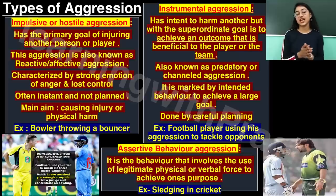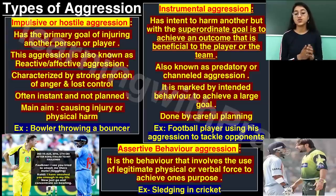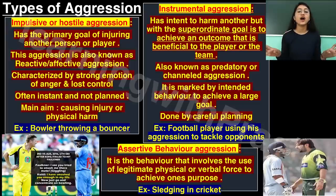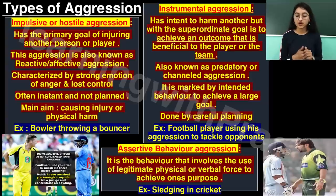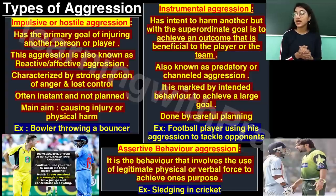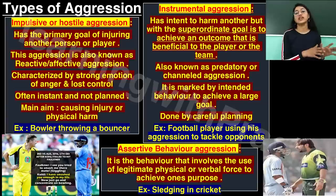Instrumental aggression has intent to harm another person, but the superordinate goal is to achieve an outcome beneficial to the player or team. Injuring is not the primary goal — the primary goal is achieving the team's objective, even if others get harmed in the process. Also known as predatory or channeled aggression, it is marked by intended behavior to achieve a larger goal and involves careful planning. Example: a footballer becoming aggressive to score a goal — the primary goal is scoring, not harming others.